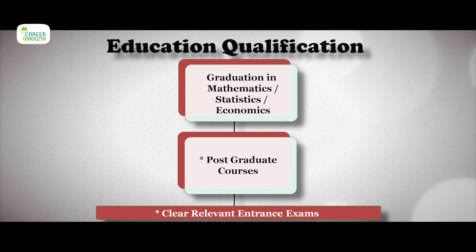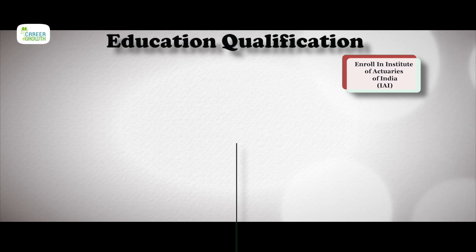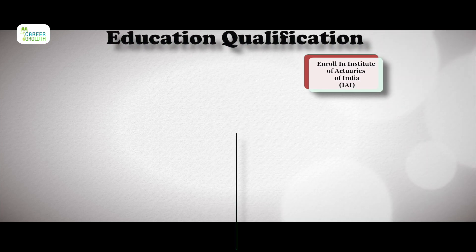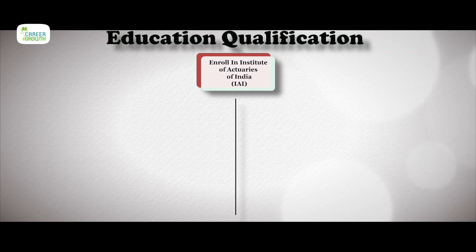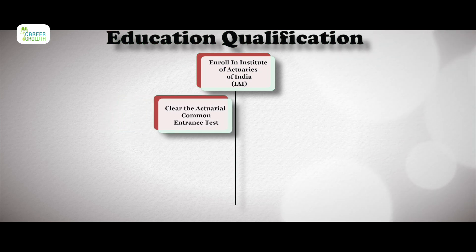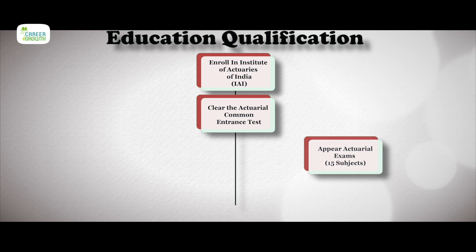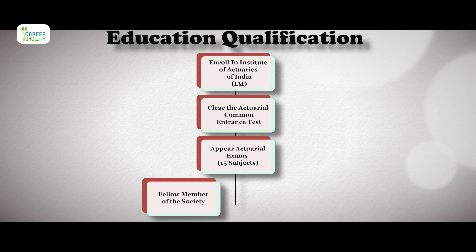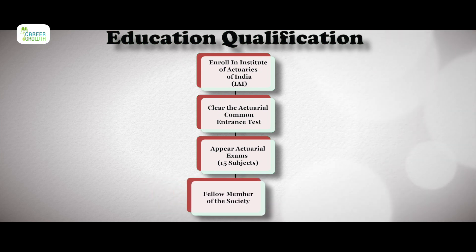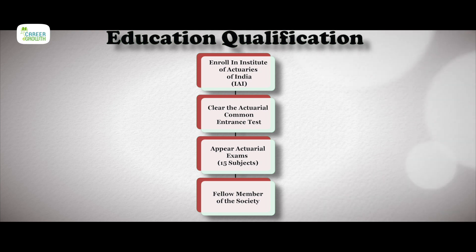But to actually work as an actuary, you will have to pass a series of actuarial exams. Studying Actuarial Science only provides theoretical knowledge and conceptual clarity. However, to work as an actuary, you need to enrol with the Institute of Actuaries of India or the Actuarial Society of India and clear the Actuarial Common Entrance Test. Once enrolled as a student actuary, you will have to appear for 15 subject exams before you become eligible to be admitted as a fellow member of the society and can use the credentials FSAI against your name as a recognized fellow.